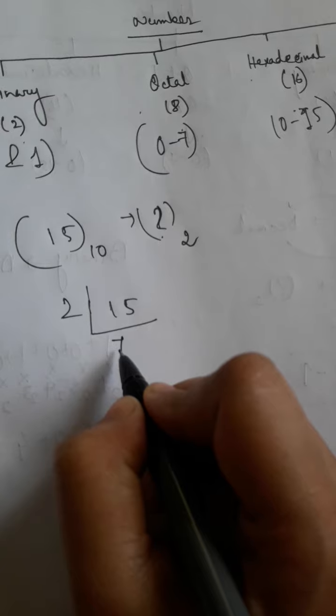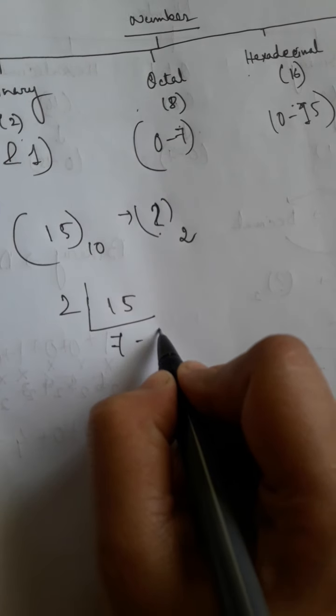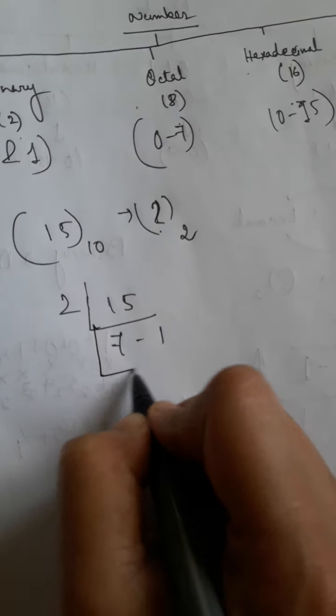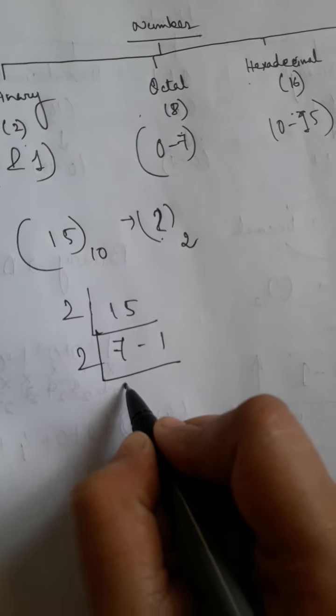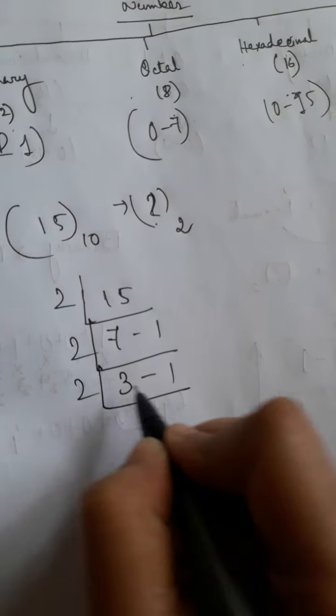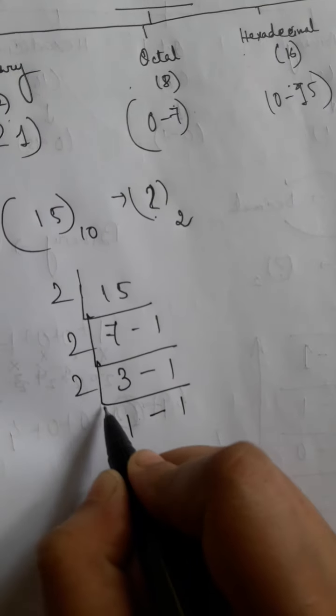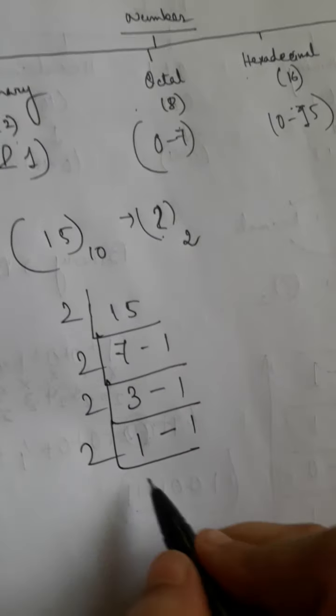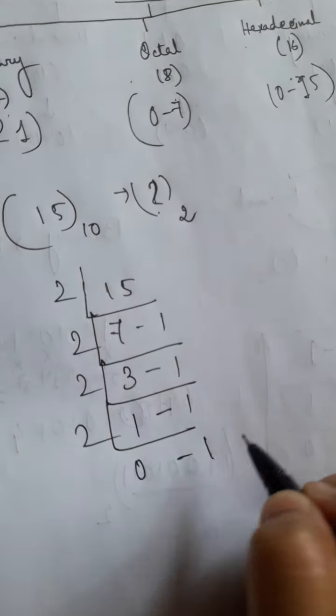Now again divide by 2, 3 is quotient, 1 is remainder. Again 2, 1 is quotient, 1 is remainder. Again 2 divide, 0 is quotient, 1 is remainder.